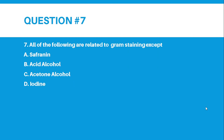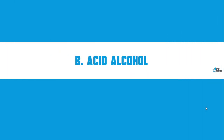Number 7. All of the following are related to gram staining except: Letter A, Safranin. Letter B, Acid Alcohol. Letter C, Acetone Alcohol. Letter D, Iodine. And the correct answer for number 7 is letter B, Acid Alcohol.